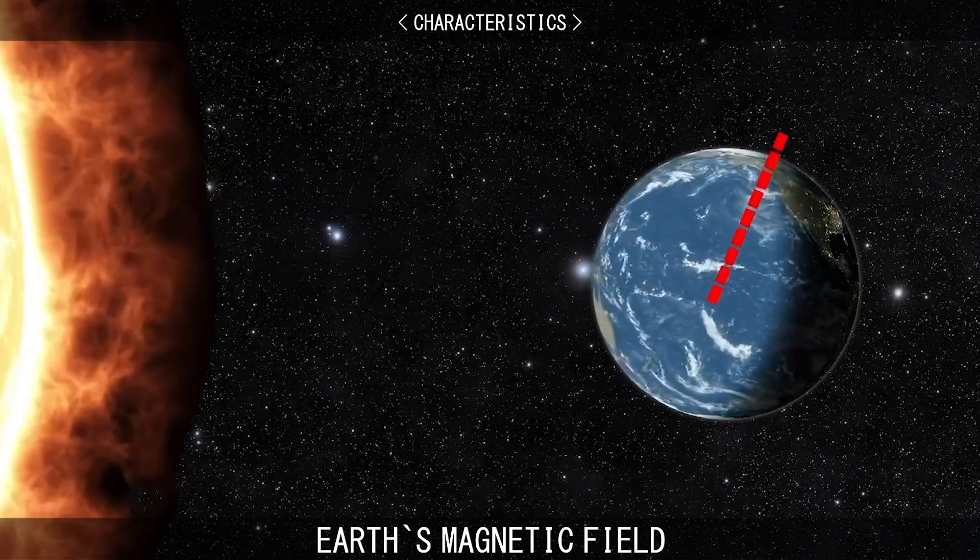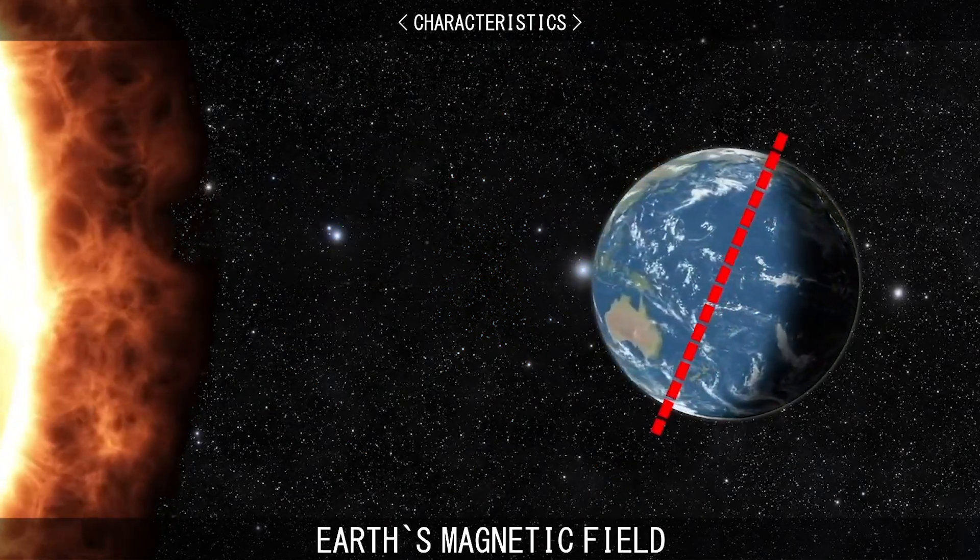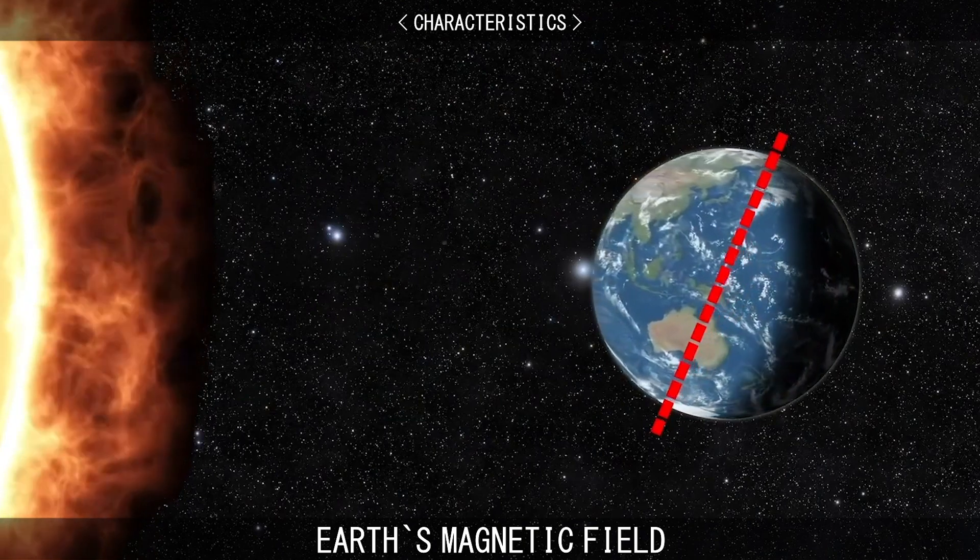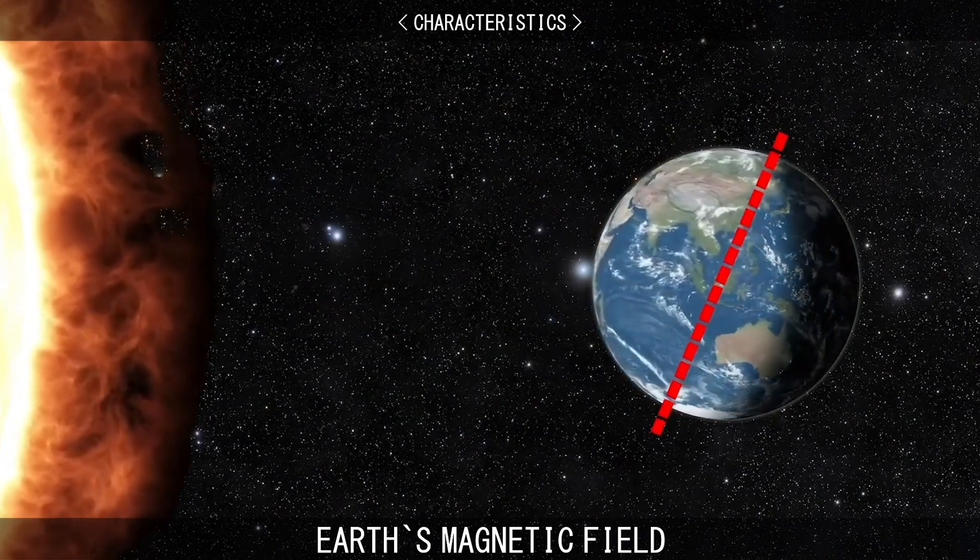The rotation of the Earth on its axis then causes these electric currents to form a magnetic field, which extends around the planet.